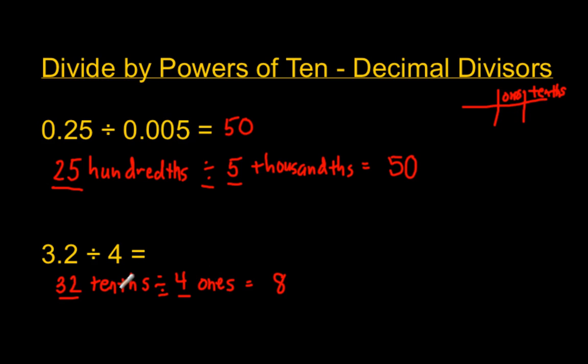And how many ones do I have in a tenth? Well, I essentially have a tenth of a one in a tenth. So how many ones do I have in a tenth? I have a tenth. So that's signaled by a tenth. So the answer there is eight tenths.